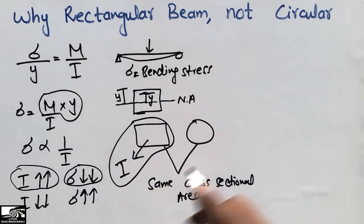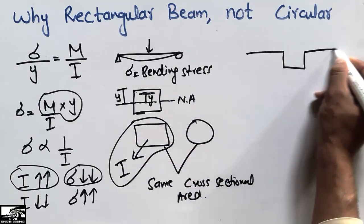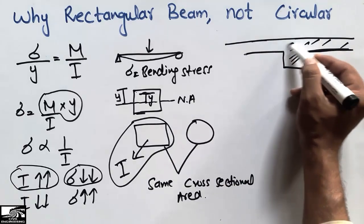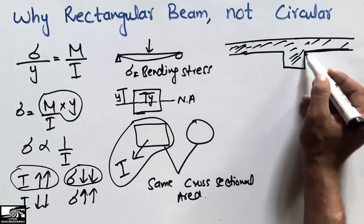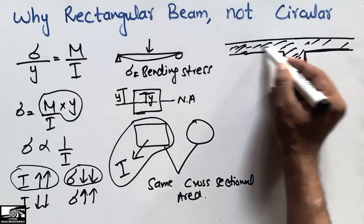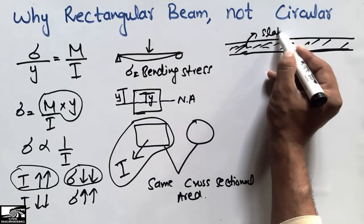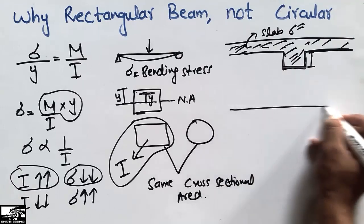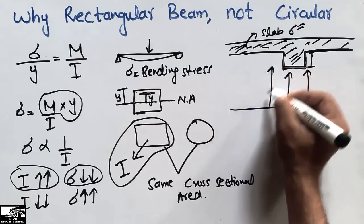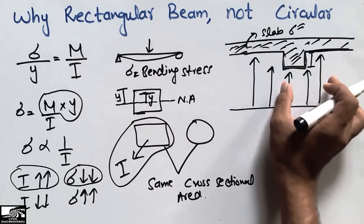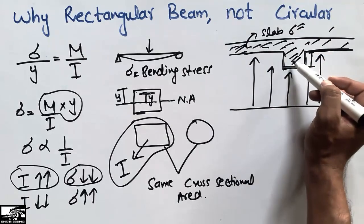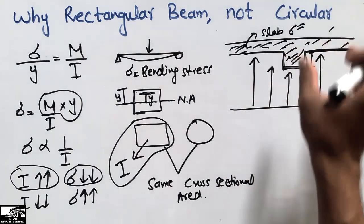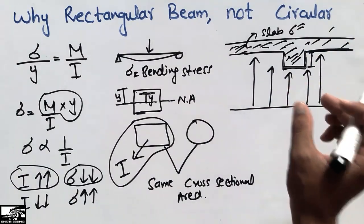The second reason: consider a beam placed on a floor of a multi-story building. When we pour concrete into the slab and beam together, you can see the T-shape formed. For a rectangular beam, the formwork can be easily provided from the floor below, and concrete can be poured easily. Rectangular formwork is simple to design and widely available in every part of the world.